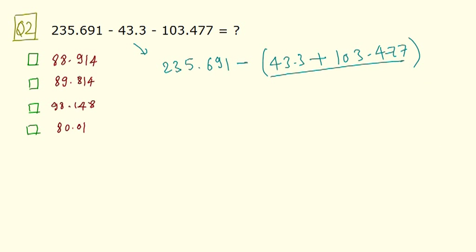So let's add these two terms. So I have 103.477 plus 43.3. So these 7 come down as it is. 4 plus 3 is again 7 dot, which is the decimal point. 3 plus 3 is 6. 10 plus 4 is 14. So 146.777. This goes there.